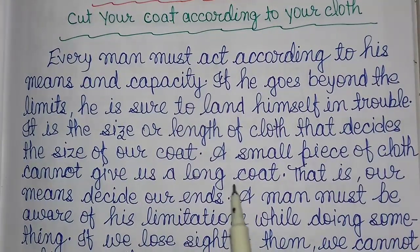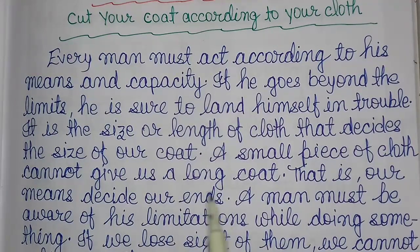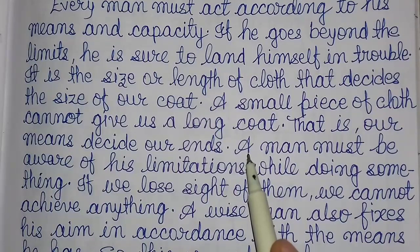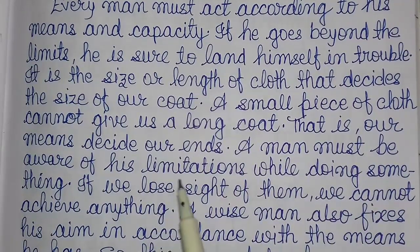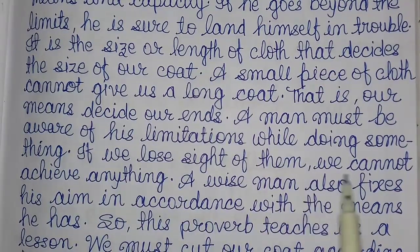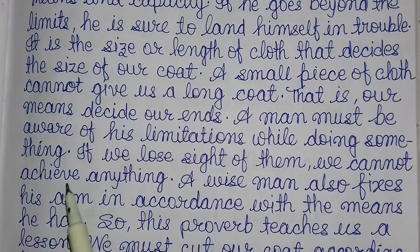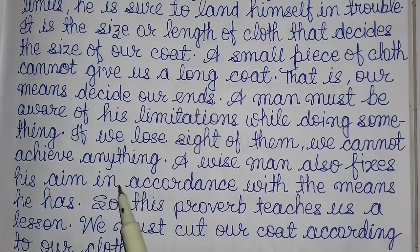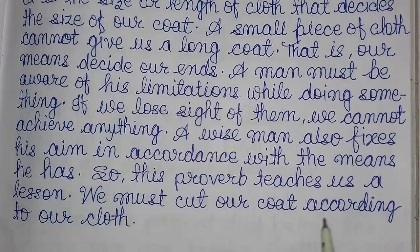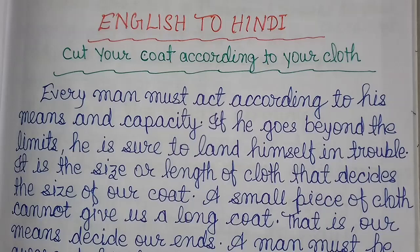A small piece of cloth cannot give us a long coat — that is, our means decide our ends. A man must be aware of his limitations while doing something. If we lose sight of them, we cannot achieve anything. A wise man also fixes his aim in accordance with the means he has. So this proverb teaches us a lesson: we must cut our coat according to our cloth.